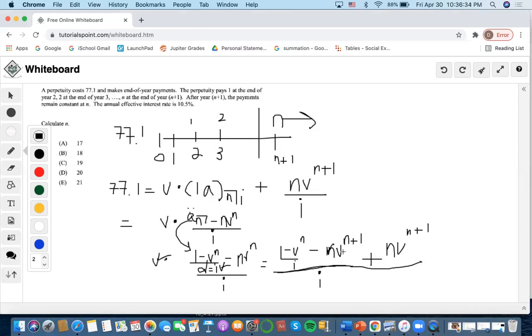These terms cancel out because they're the same. After simplifying, we get 77.1 equals (1 - v^n)/i².